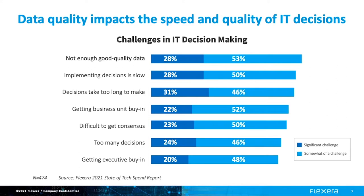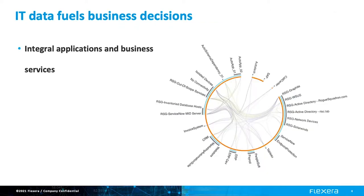Reliable data builds a fact-based conversation in order to get consensus from stakeholders and executives. As we know, digital transformation is a goal for many CIOs — process automation in IT requires good quality data. Without this reliable data, critical decisions are slowed or halted.